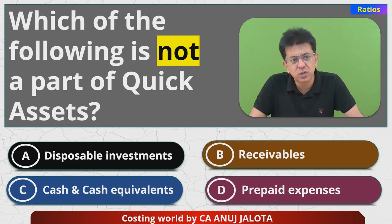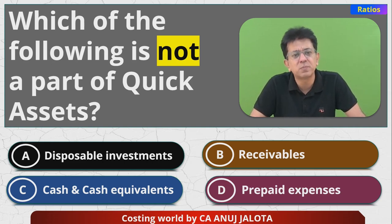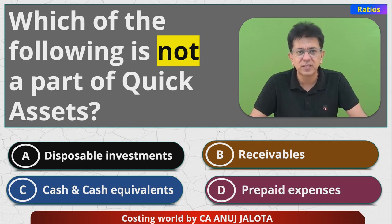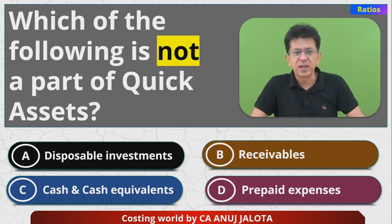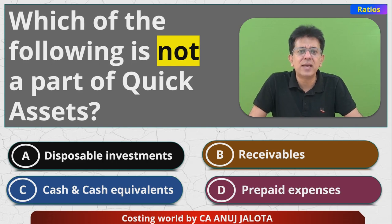Disposable investments are basically those investments purchased from the stock exchange, so they can be sold and you can get the money within two or three days. Debtors — you have already sold the goods, so there is no uncertainty, and usually credit given to customers is around a month or two, so that money is also realized within a short period of time.